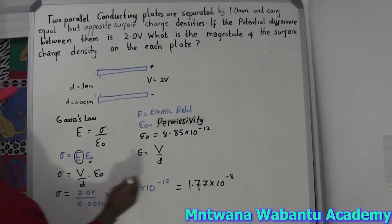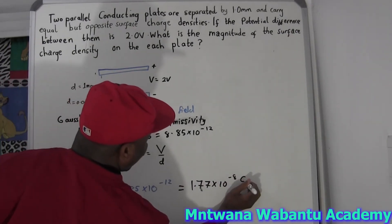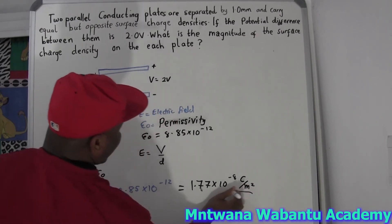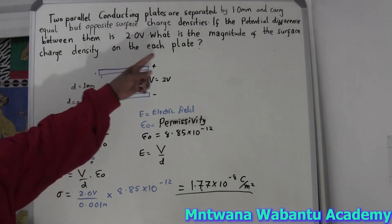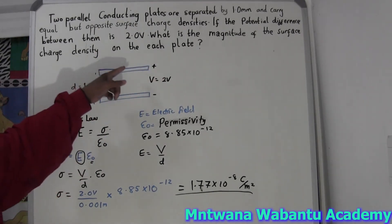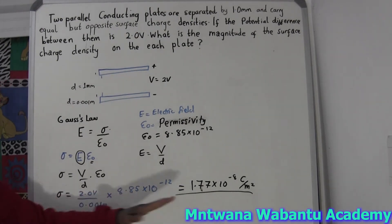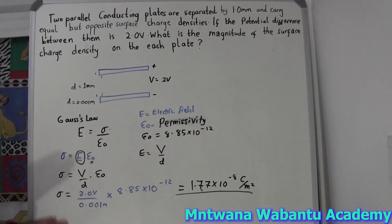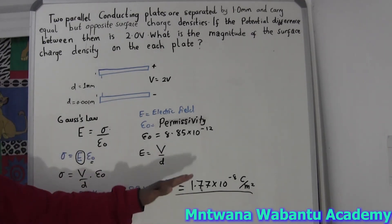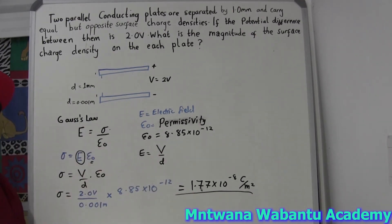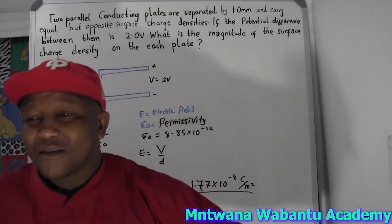The unit for surface charge density is coulombs per meter squared. So for this case, the surface charge density we're looking for — the magnitude of the surface charge density on each plate — each plate is going to have a surface charge density of 1.77 times 10 to the power of negative 8 C/m².